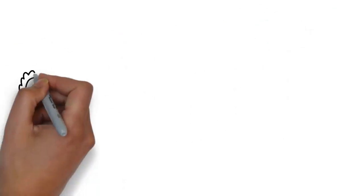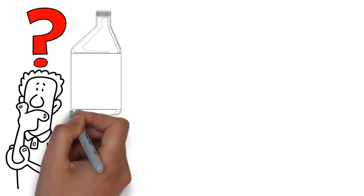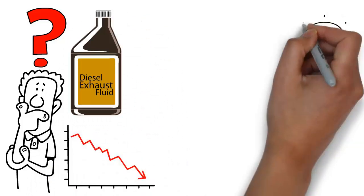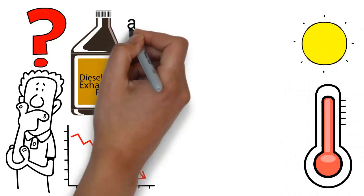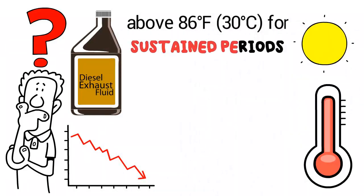What is the shelf life of diesel exhaust fluid, DEF? Diesel exhaust fluid has a shelf life of two years. However, this can be reduced if the fluid is exposed to direct sunlight or if the temperature of the DEF remains above 86 degrees Fahrenheit, 30 degrees Celsius, for sustained periods.